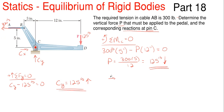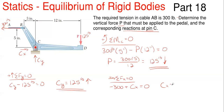In the X direction to get Cx: the 300 pounds is going left, so negative 300, and Cx I have pointed to the right, so positive Cx. Cy and the P force are both in the Y direction, so don't include them here. Cx comes out to be 300 pounds. It's positive, so my assumed arrow direction of to the right is correct, and you can also see that visually.